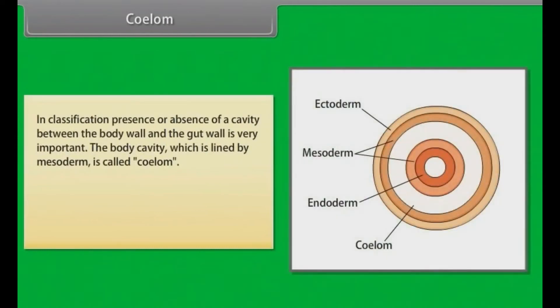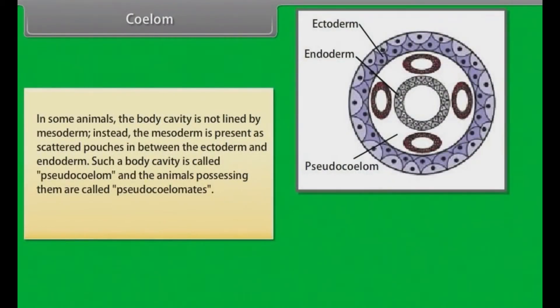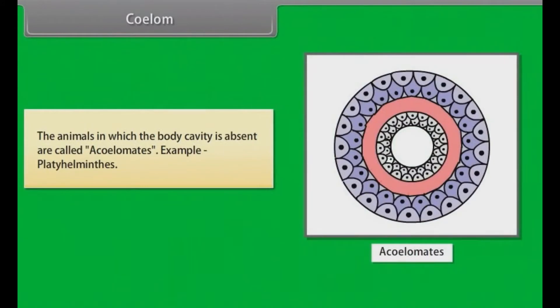Coelom. In classification, presence or absence of a cavity between the body wall and the gut wall is very important. The body cavity which is lined by mesoderm is called coelom. Animals possessing coelom are called coelomate. Example: Annelids, molluscs, arthropods, echinoderms, hemichordates and chordates. In some animals, the body cavity is not lined by mesoderm. Instead, the mesoderm is present as scattered pouches in between the ectoderm and endoderm. Such a body cavity is called pseudocoelom and the animals possessing them are called pseudocoelomates. Example: Aschelminthes. The animals in which the body cavity is absent are called acoelomates. Example: Platyhelminthes.